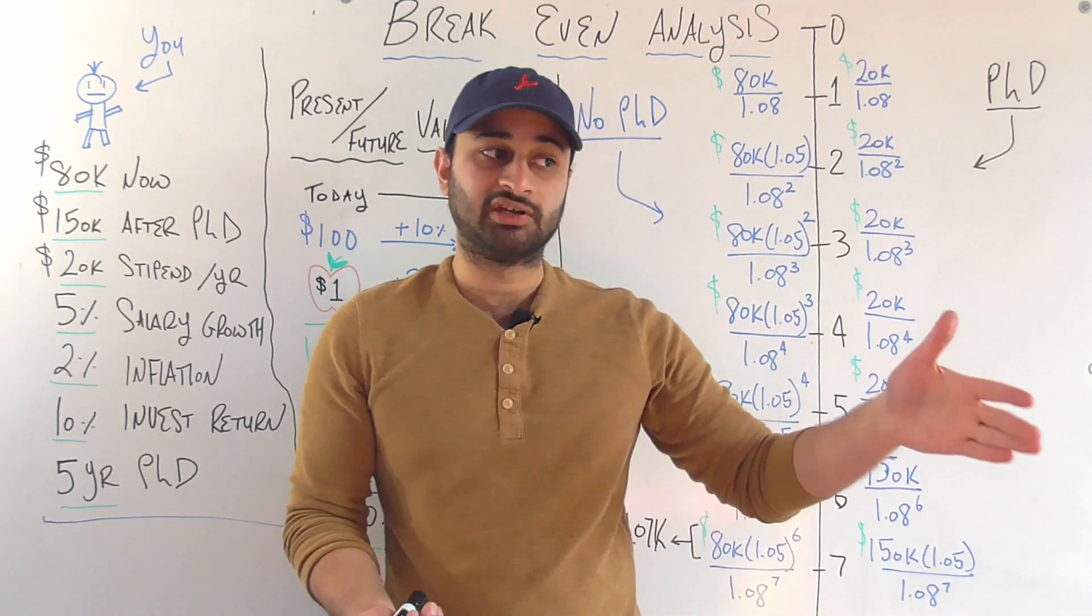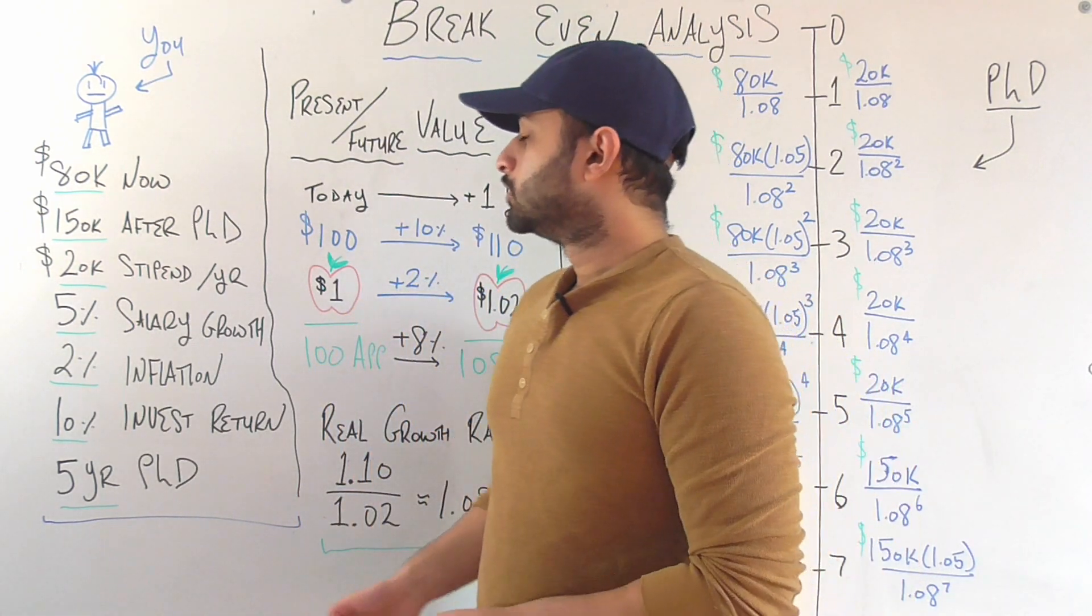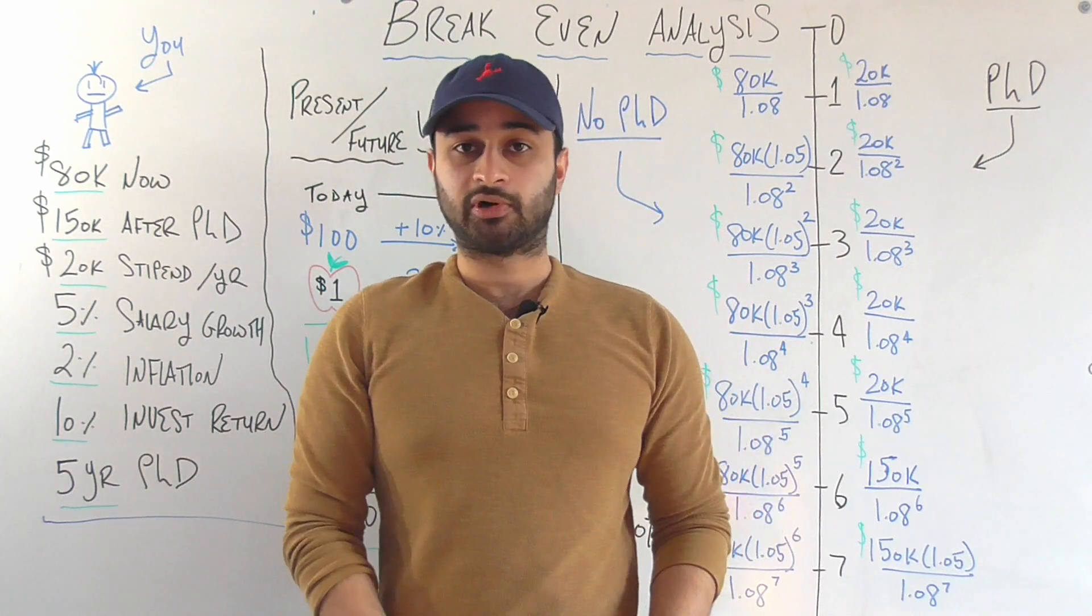For example, how long is it going to take me to see the return on my PhD? First let's look at all of these numbers. So let's say you're currently making $80,000 per year. So you have a job, you're making $80,000 per year.